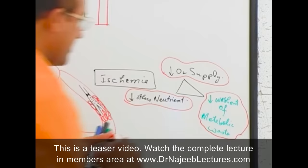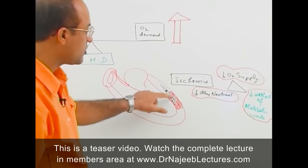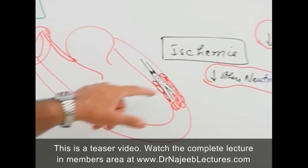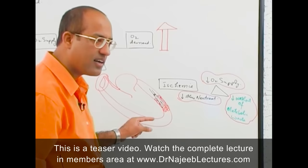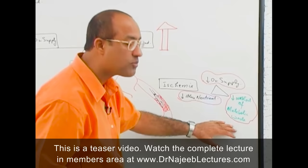Ischemia has three problems. If a piece of myocardium is under ischemia, perfusion has been relatively reduced — not only is oxygen less, but other nutrients are also deficient, and there is impaired washout of metabolic waste from this area. So this is a double problem: ischemia is more dangerous than simple hypoxemia.